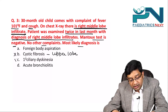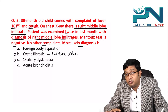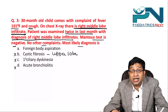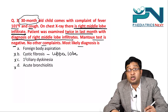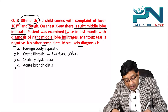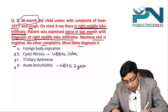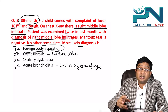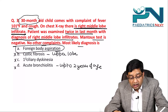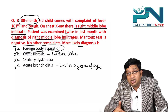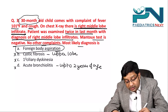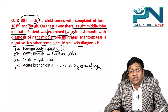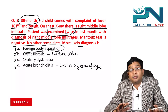Primary ciliary dyskinesia mainly affects the lower lobes, so that is ruled out. Acute bronchiolitis is ruled out because it is most common in the first six months and up to two years of age. The most likely diagnosis is foreign body aspiration, causing localized pneumonia. Since the foreign body has not been removed, the child cannot recover, explaining repeated presentations.